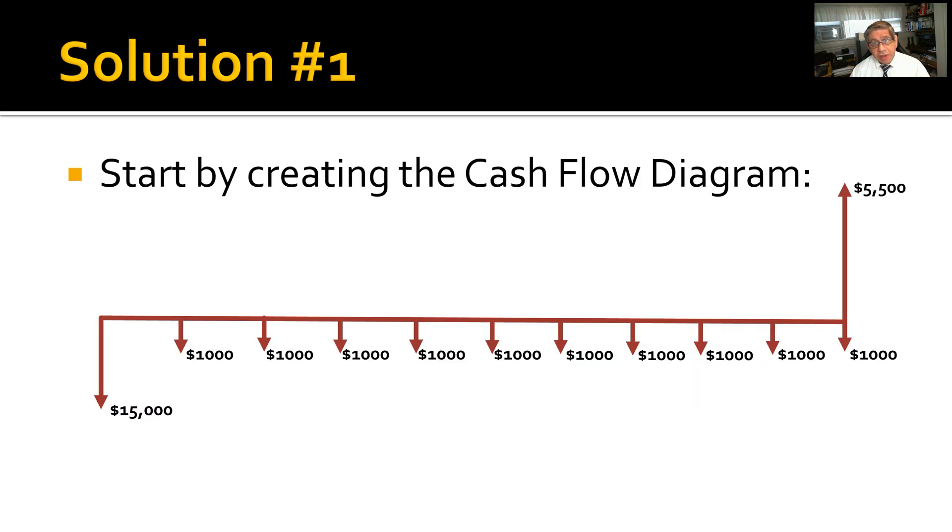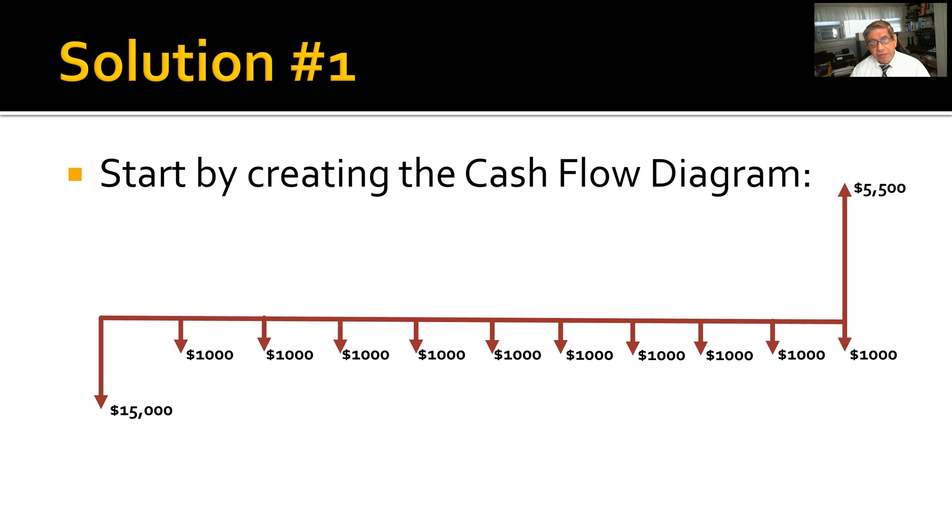Solution to problem number one: Start by creating the cash flow diagram. This is the cash flow diagram for that particular problem—initial outlay $15,000, salvage value $5,500, and increments of $1,000 over a 10-year period. Then calculate each part separately using the tables throughout. Tables work out well in this case.